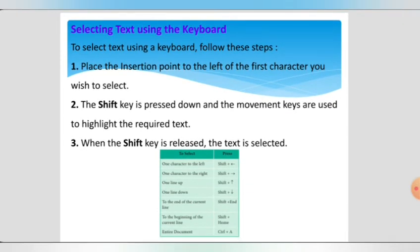Another method is selecting text using the keyboard. Place the insertion point to the left of the first character you wish to select. Then hold the Shift key and use the movement keys (arrow keys) to highlight the required text. When you want to select particular text, press the Shift key along with the movement keys to highlight the required text.